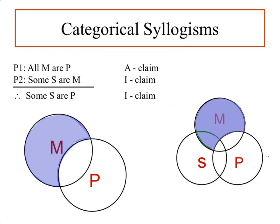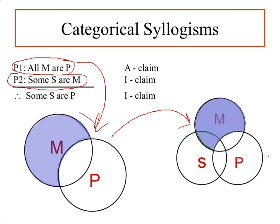Here we are with our argument. From earlier videos we learned that when faced with a universal claim — as in premise 1, all M are P — and a particular claim — premise 2, some S are M — we're going to diagram the universal claim first. That is the correctly diagrammed "all M are P." I have it as a standalone on the left because sometimes it's easier to recall what it looks like when trying to duplicate it in the three-category Venn diagram on the right.